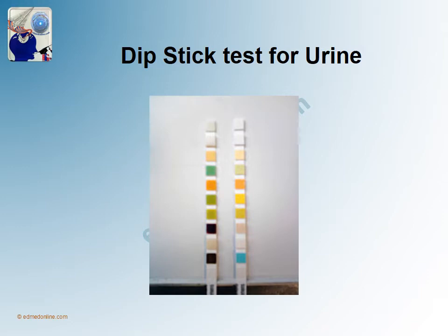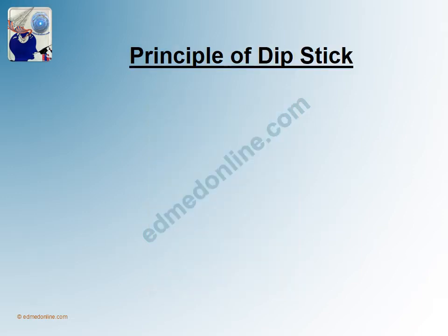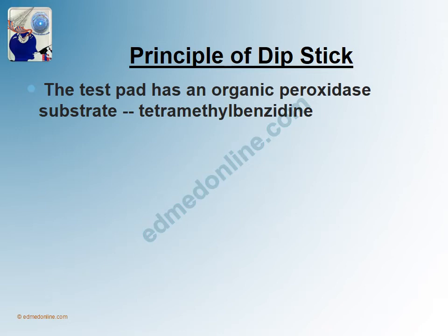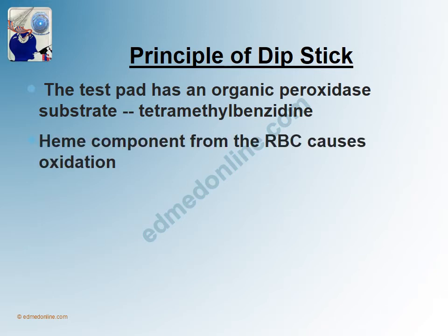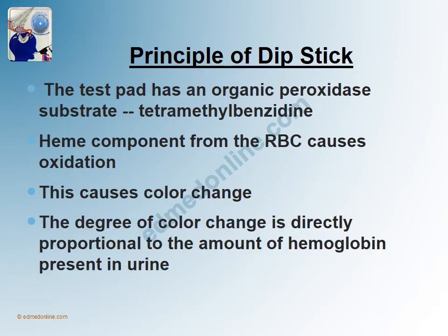The dipstick is a stick where there are multiple pads which can pick up presence of leukocytes, bacteria, pH, proteins, as well as the presence of RBCs. The principle of dipstick is that the test pad has an organic peroxidase substrate called tetramethylbenzidine. When urine has RBCs, the heme component from those RBCs causes oxidation, which causes a color change. The degree of color change is directly proportional to the amount of hemoglobin present in the urine.